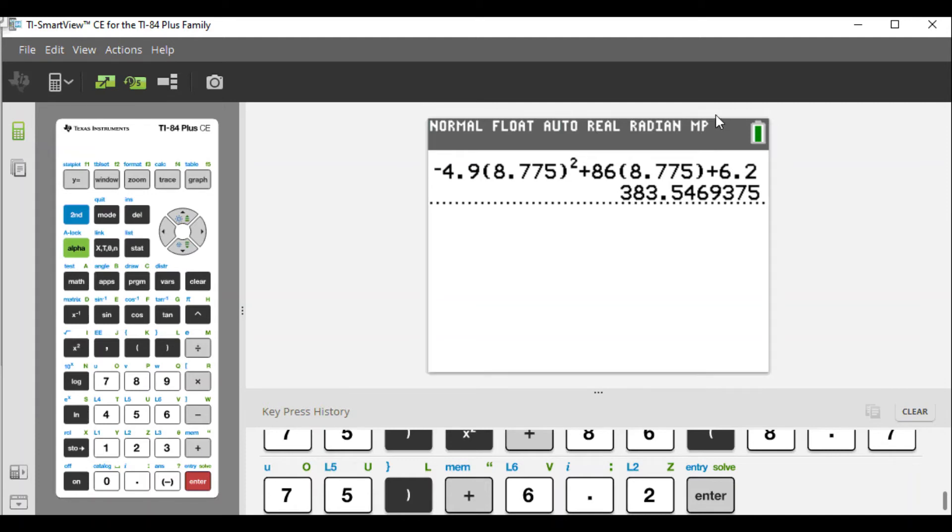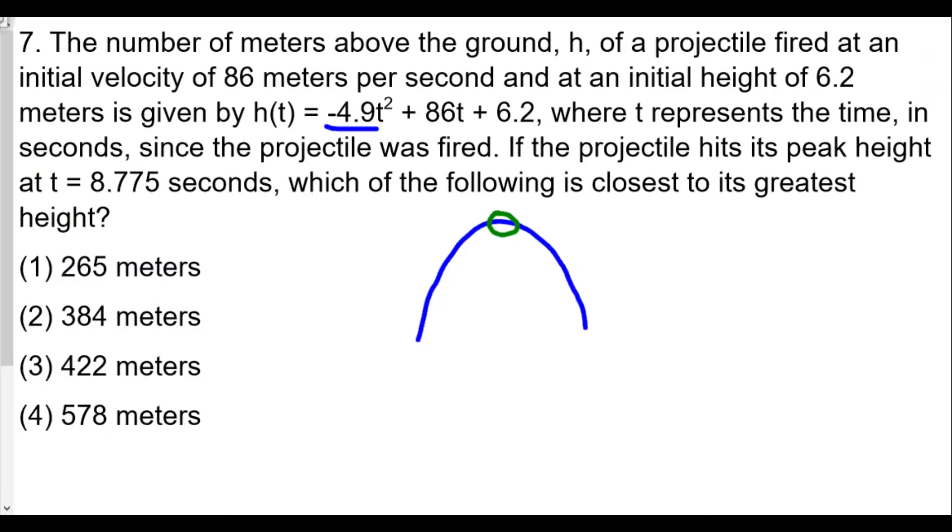This will be the maximum height because it reaches maximum height at 8.775 seconds. That rounds up to about 384, and that's what our answer is going to be: 384 meters. For this one, we just plug the time into our equation and we'll find the height.